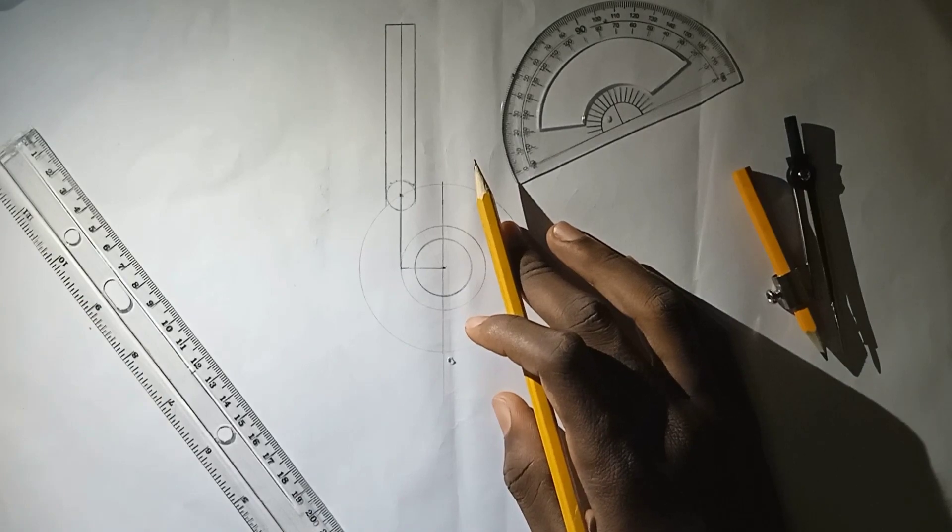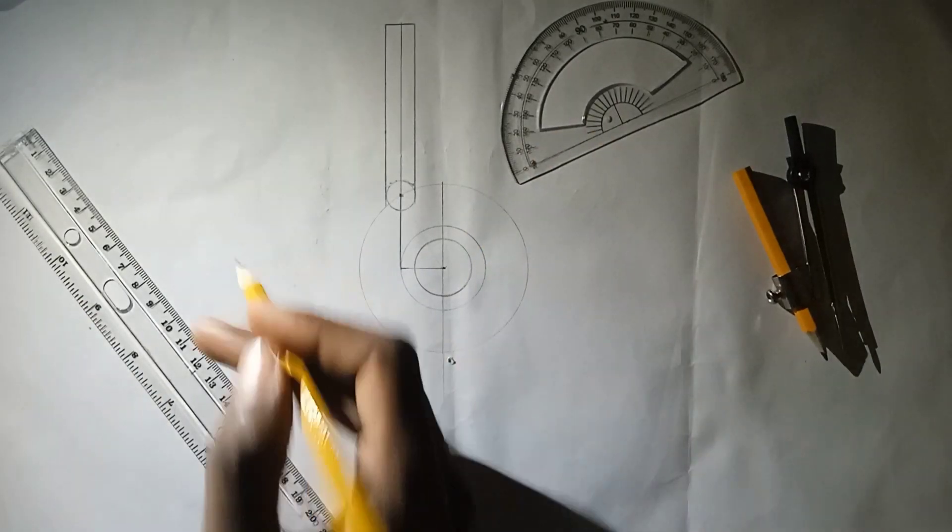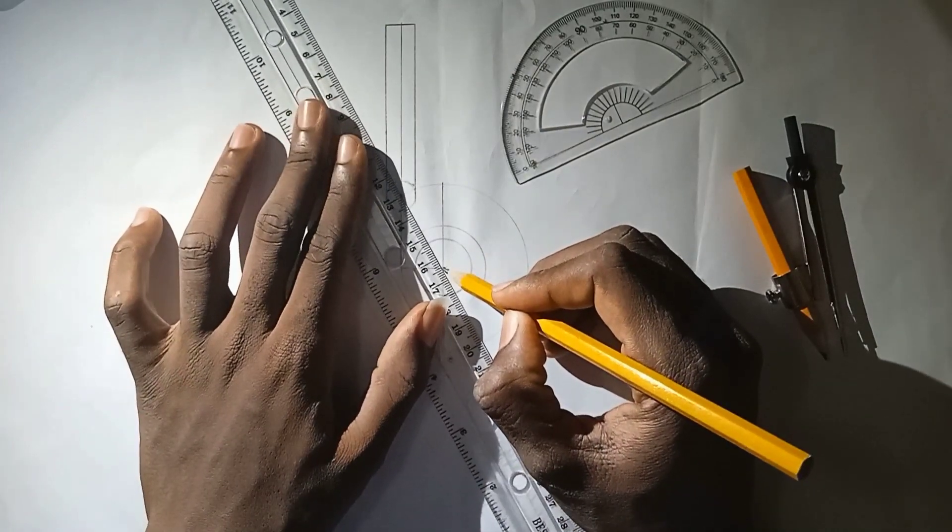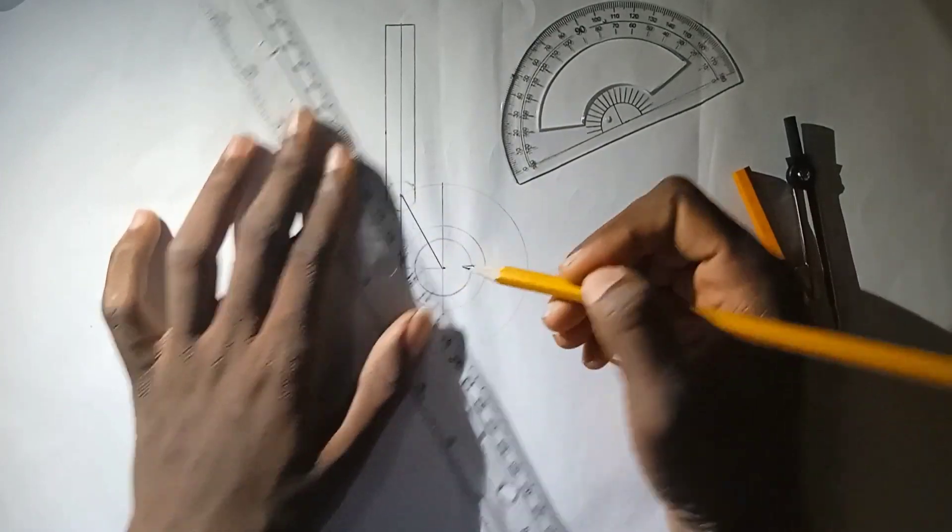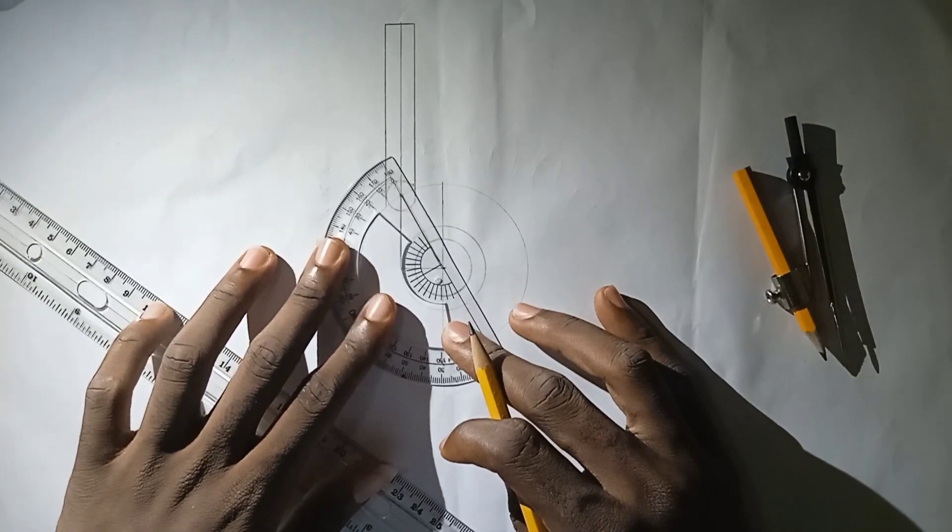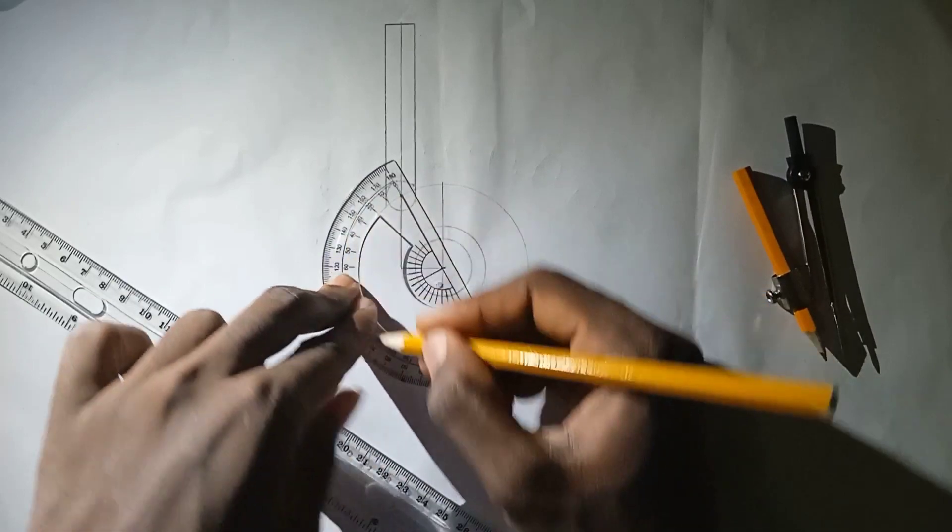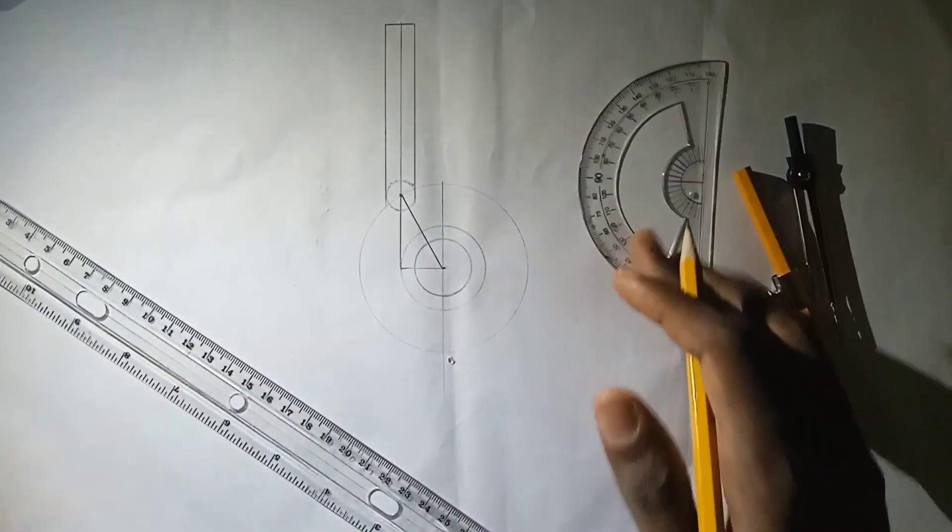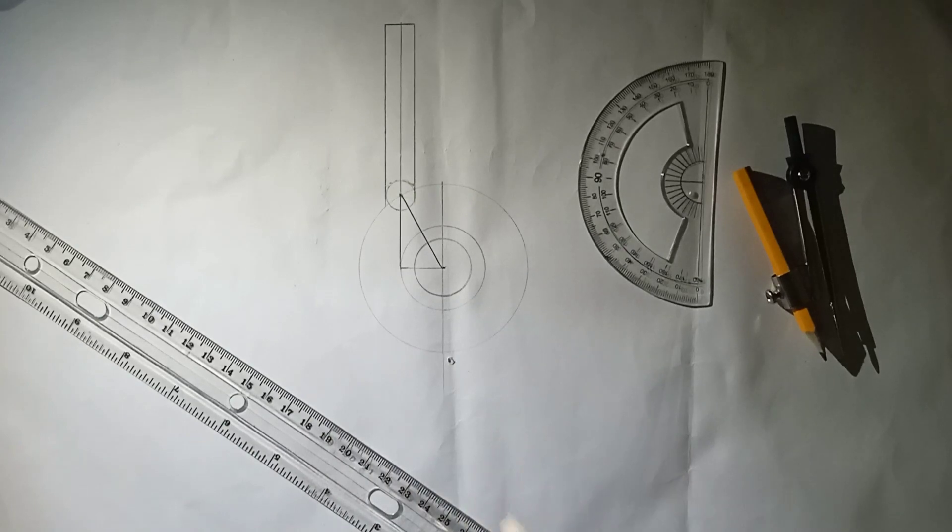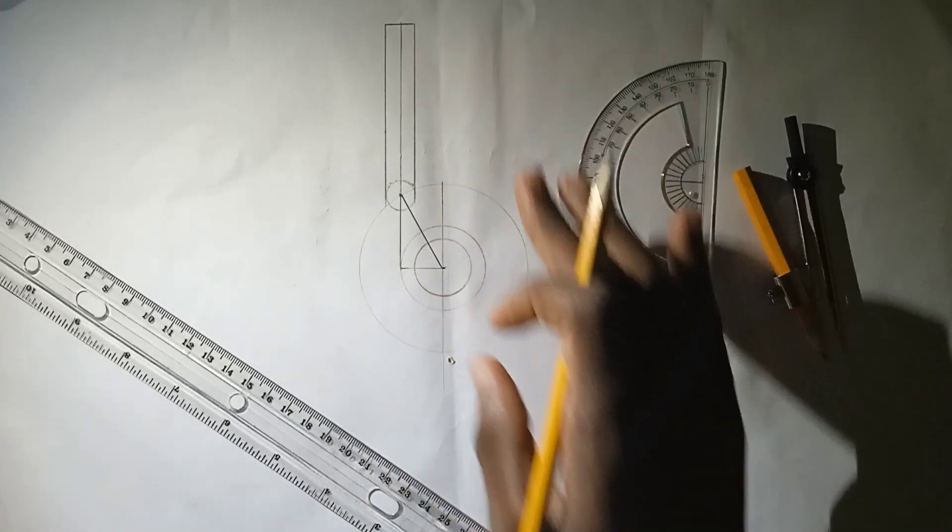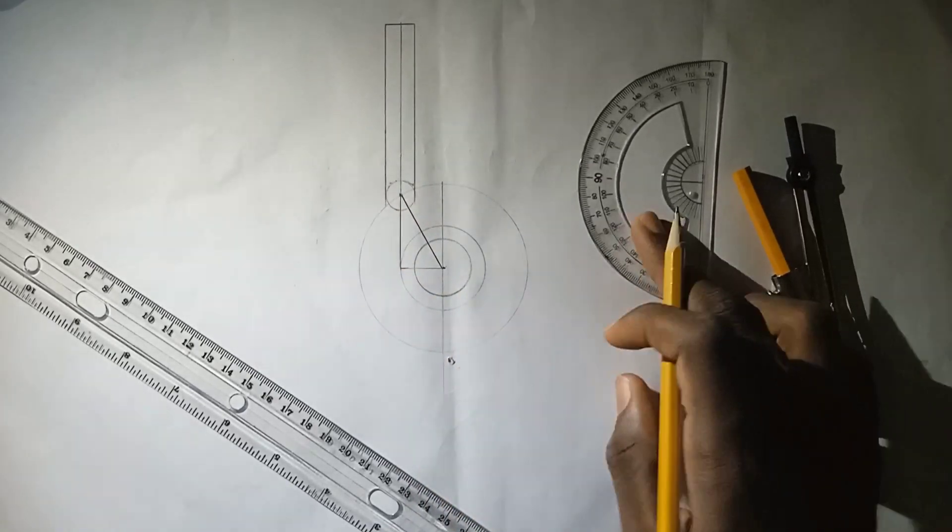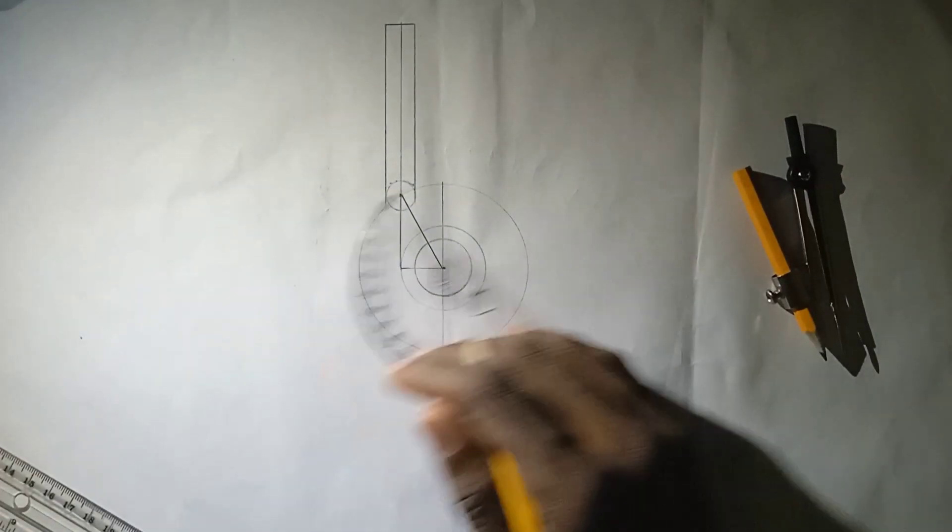Now because this question didn't give us any motion or any degrees, normally if we're given a degree we will join these two points and then start measuring our degree from these parts if we're given lift with turn. But this question wasn't giving any degree so we're going to divide this circle into 12 equal parts. Now I'm not going to do the normal 12 equal parts because this is an offset, it's not starting from the center.